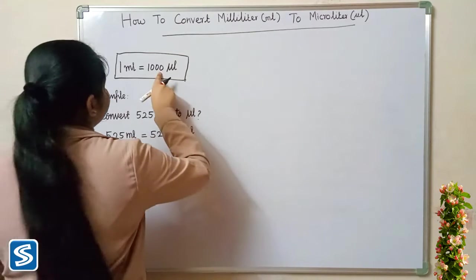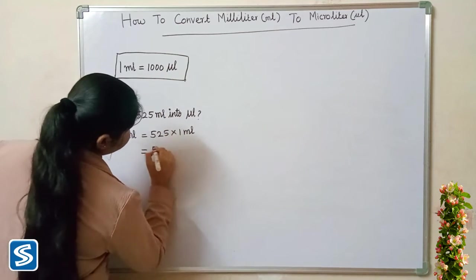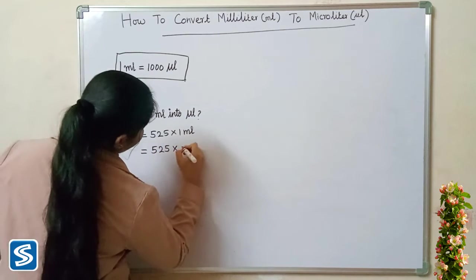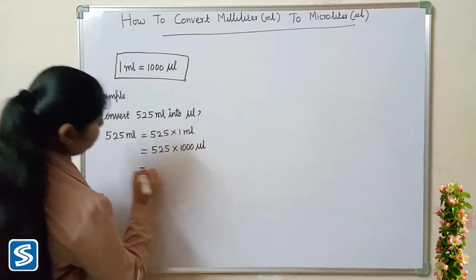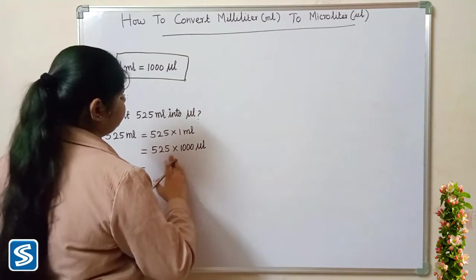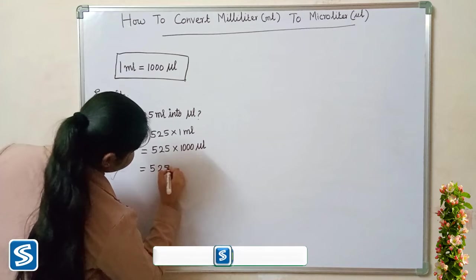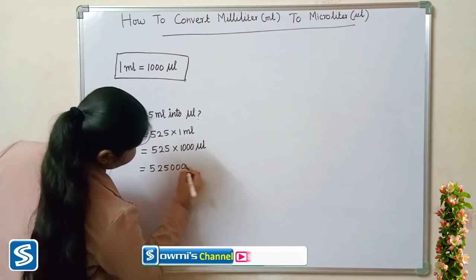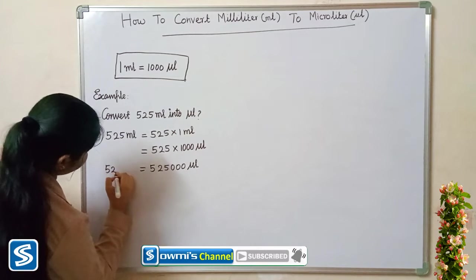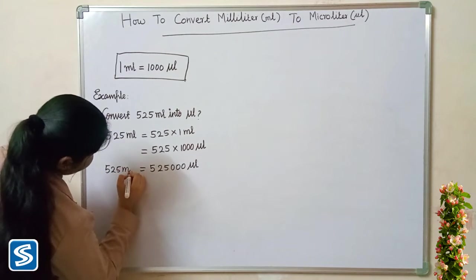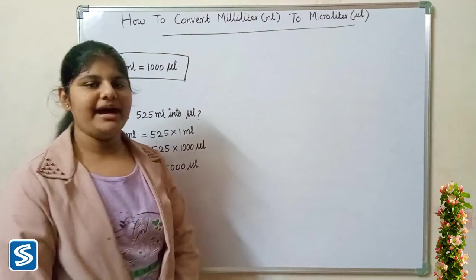Five hundred and twenty five milliliters can be written as five hundred and twenty five multiply one milliliter. Now we substitute one thousand microliters in the place of one milliliter, so five hundred and twenty five multiply one thousand microliters equals five lakh twenty five thousand microliters.